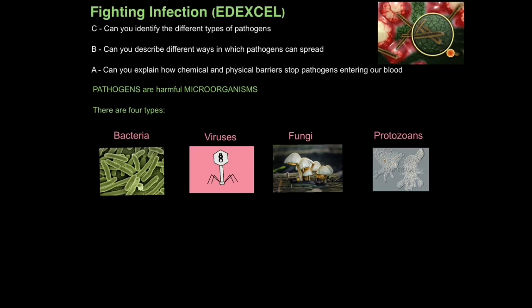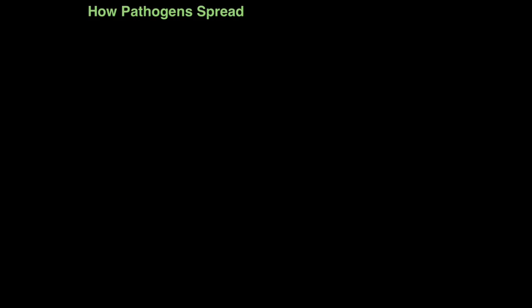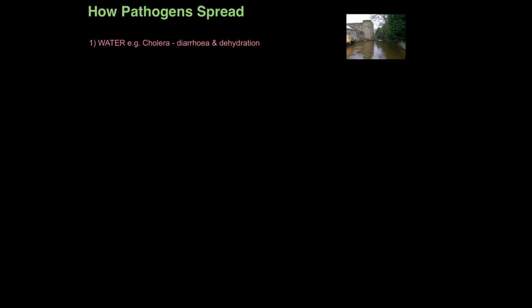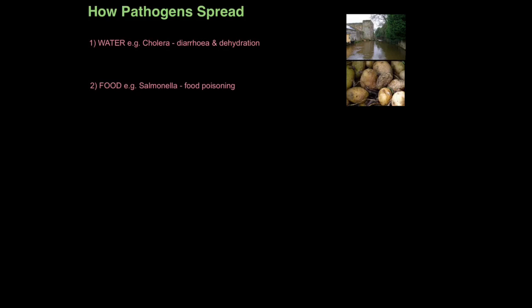Those are the four different types of pathogens you need to be able to identify. Now we're going to look at how pathogens spread. Some infectious diseases can be transmitted through water — an example is cholera, a bacterial infection which can lead to diarrhoea and dehydration. Cholera can be acquired when people drink water contaminated with the diarrhoea of other cholera sufferers. Some infectious diseases are transmitted through food — for example, salmonella, which is the cause of food poisoning, obtained through eating undercooked meat or eating certain foods past their use-by date.